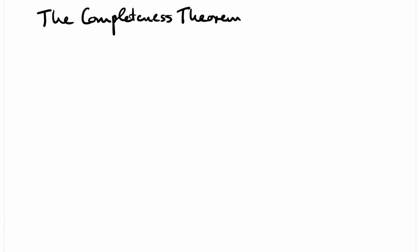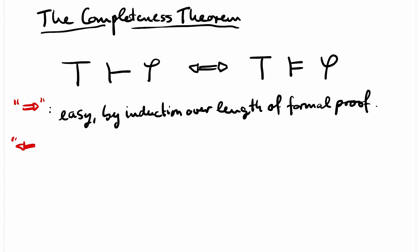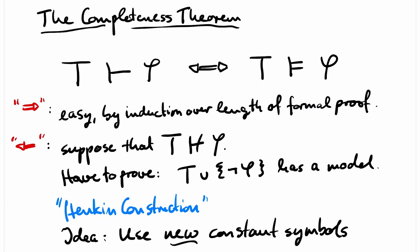The completeness theorem takes the following short and elegant form: φ has a formal proof in T if and only if T implies φ. The forward direction is easy to prove by induction over the length of the formal proof. For the converse, suppose that φ does not have a formal proof in T. We have to show that T ∪ {¬φ} has a model, so we have to construct a model, and the construction that we use is called the Henkin construction.